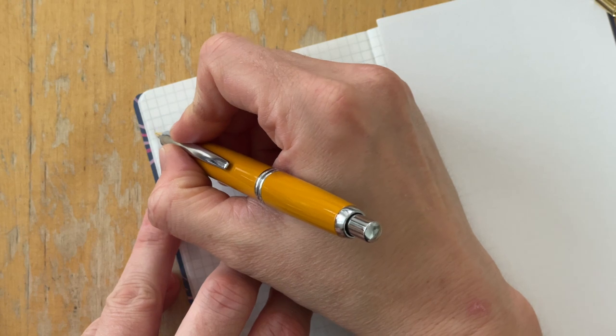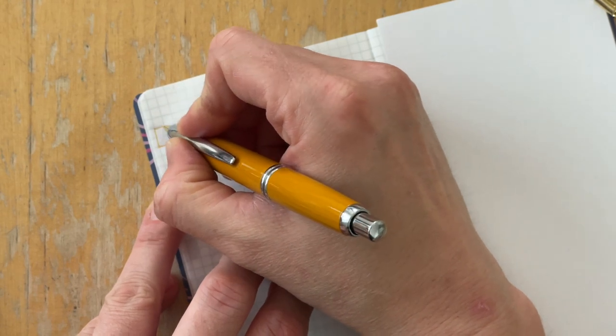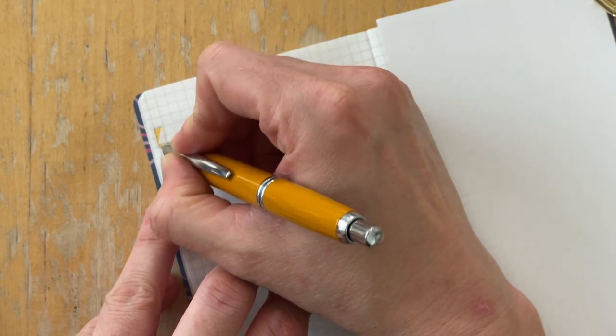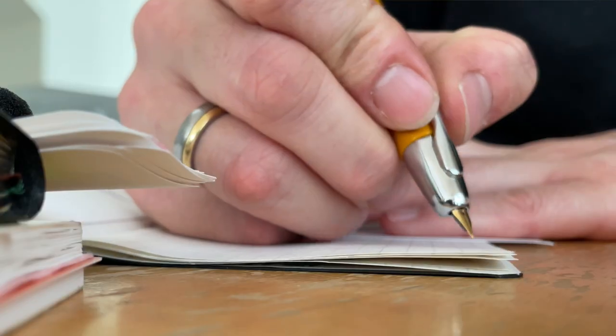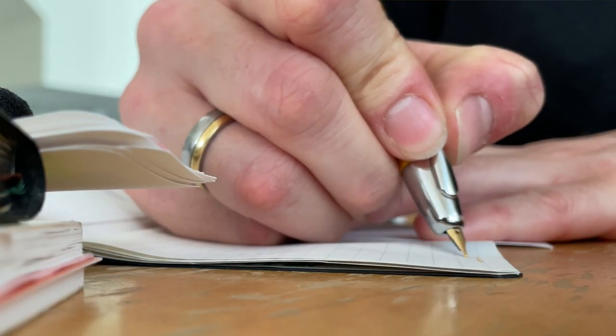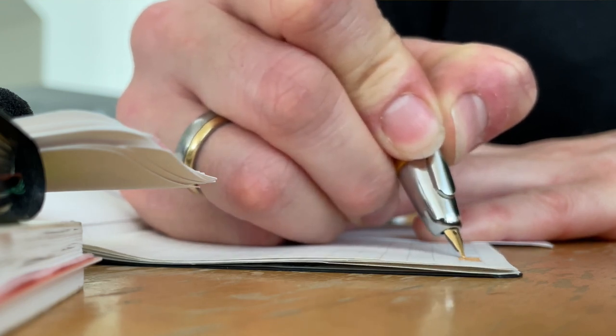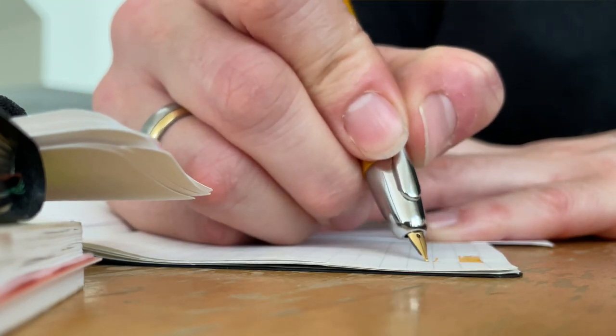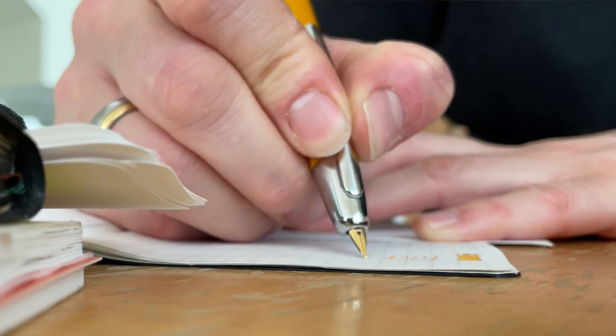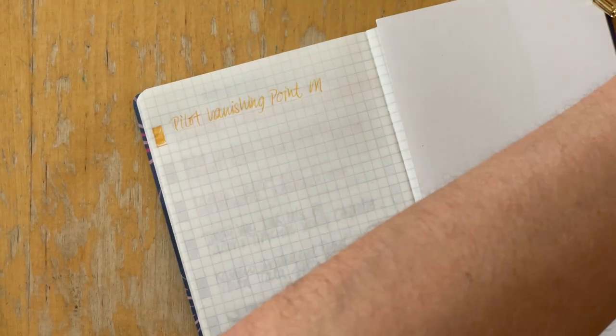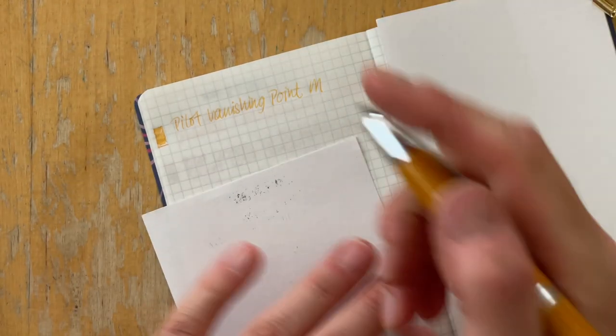Okay. So this is the pilot vanishing point with an M nib.